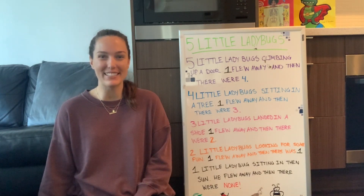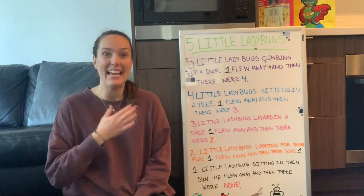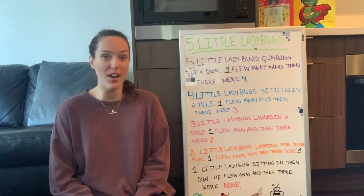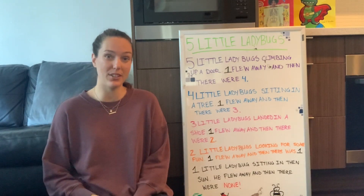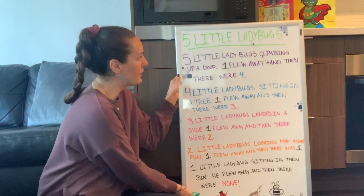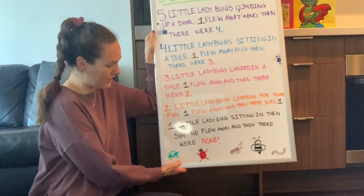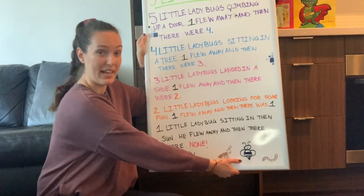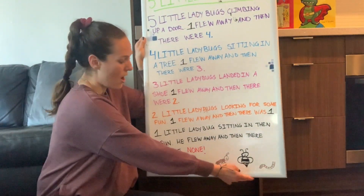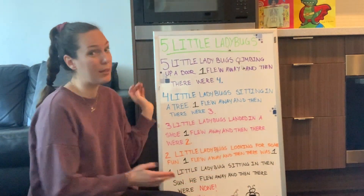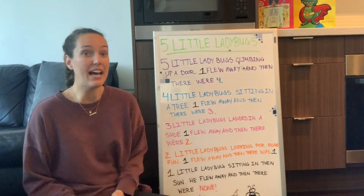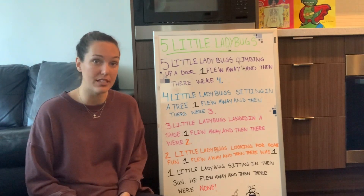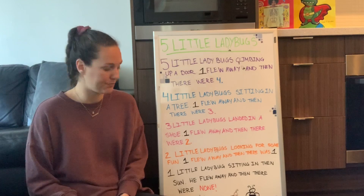Hi everyone, welcome back to circle time. My name is Miss Kaya, and today we're going to be talking all about bugs and insects — so exciting! I've drawn a few bugs and insects on my whiteboard. We have a grasshopper, a ladybug, an ant, a bee, and a worm. All of these bugs and insects are so important because they help with things like helping things grow, soil for plants, flowers, and all of our fruits and vegetables.